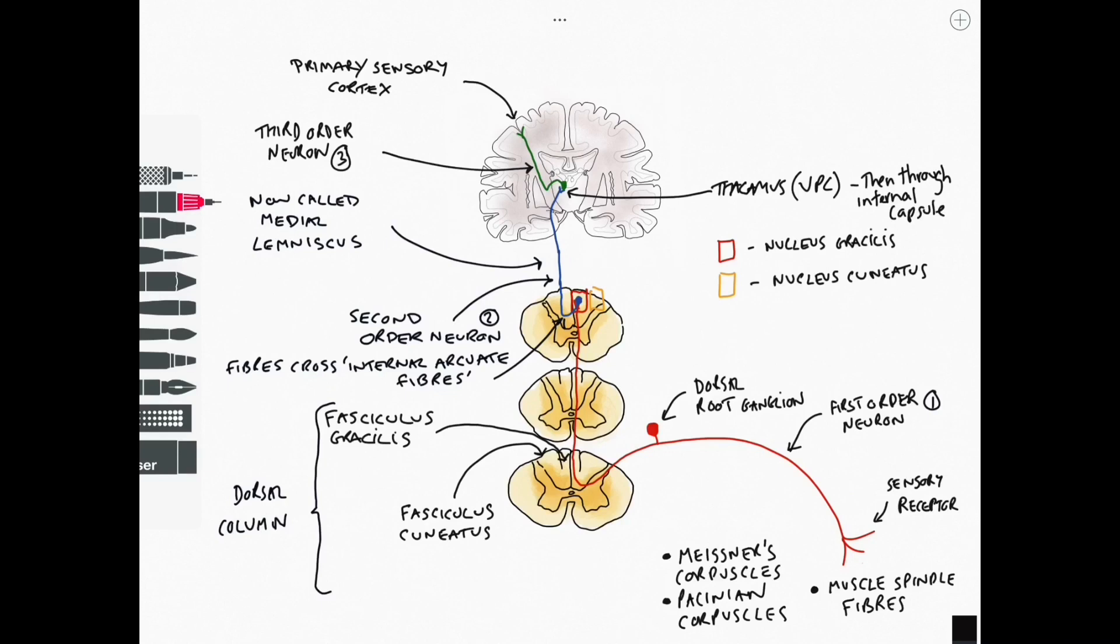of the cerebrum which is the deep white matter of the cerebrum so it travels through the corona radiata and then on towards the primary sensory cortex or the somatosensory cortex